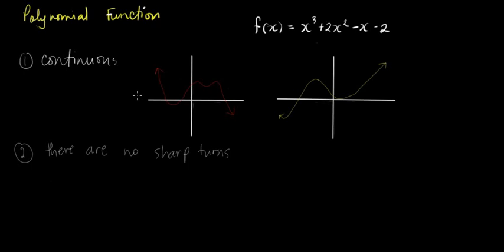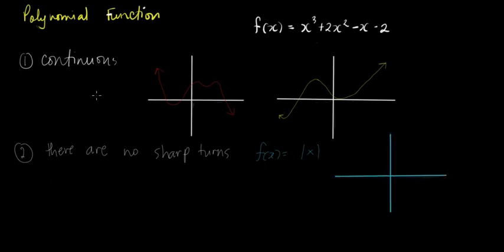If you will remember, ano yung graph ng absolute value function? Hindi ganun. Kasi ang graph ng absolute value function, may sharp turn yun. Remember the graph of f of x is equal to absolute value of x — yung graph nito has a very sharp turn. Roughly ganyan yung graph niya. So for a polynomial function, sobrang smooth ng transition. Rounded lahat ng turns niya.